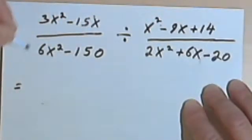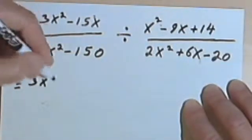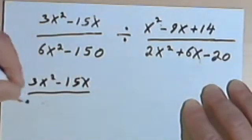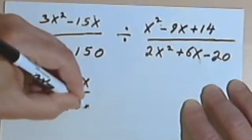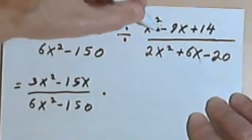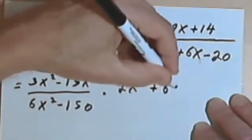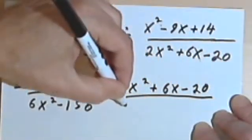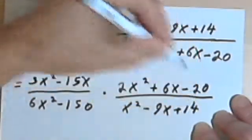So the first step here is just going to be to rewrite this. The first fraction, the first rational expression, is going to remain exactly the same. I'm going to change my division sign to multiplication sign. The second one is going to get flipped over. So that means over here I have 2x² + 6x - 20 over x² - 9x + 14.